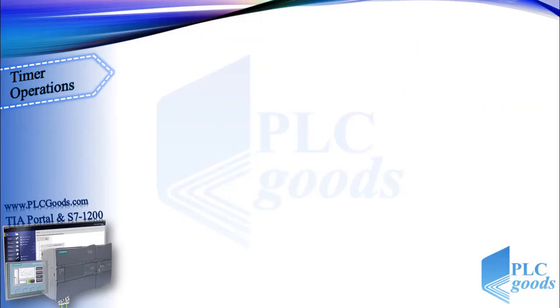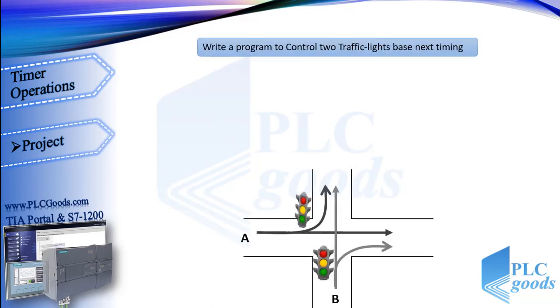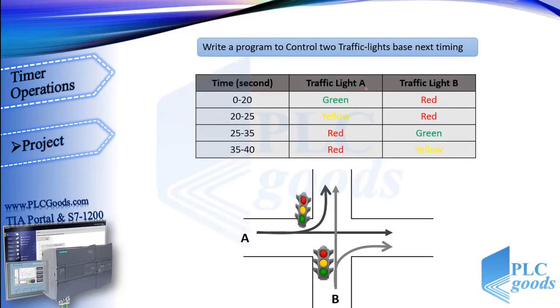Now let's do a simple project. Here we have two streets, A and B. I want to write a simple program to control two traffic lights. When I press a start push button, street A must be open for 20 seconds.